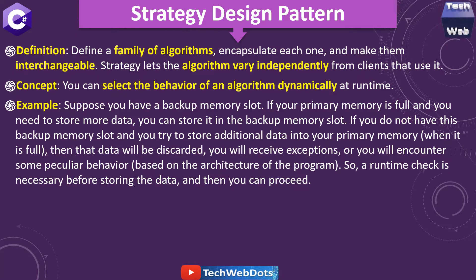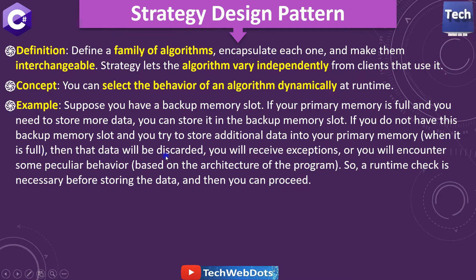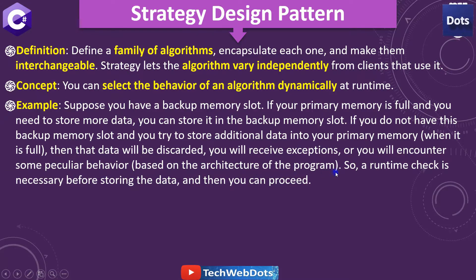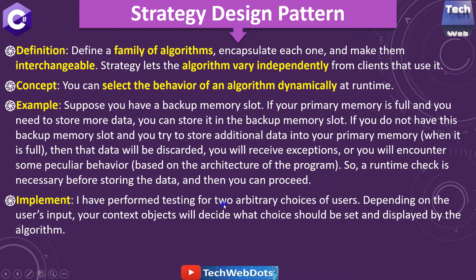For example, suppose you have a backup memory slot. If your primary memory is full and you need to store more data, you can store it in the backup memory slot. If you don't have a backup slot, you try to store additional data into your primary memory — when it's full, the data will be discarded and you'll encounter exceptions or particular behavior based on the architecture. A runtime check is necessary before storing data.